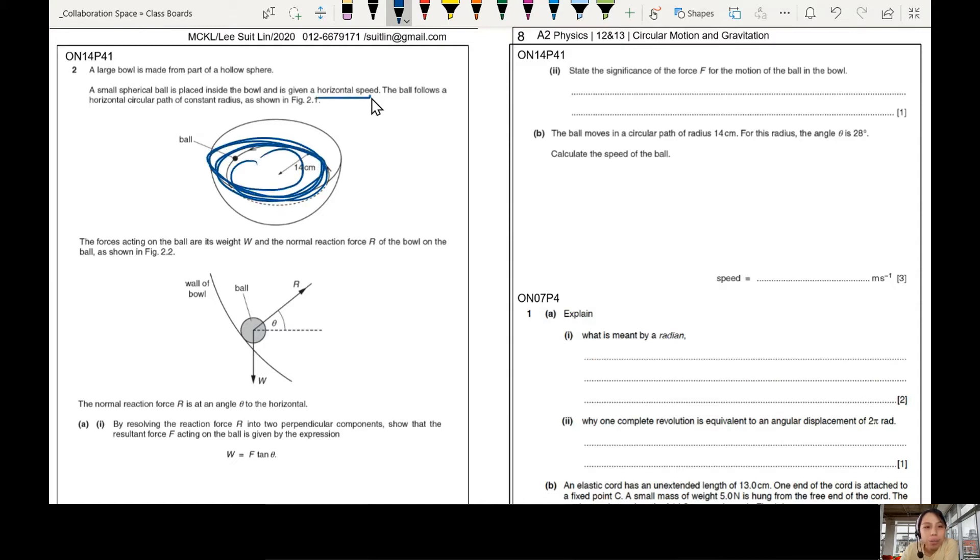So the ball is going around a constant radius, we assume the speed is not changing, it's a perfect stable circle. The forces acting on this ball is weight and normal reaction as shown.